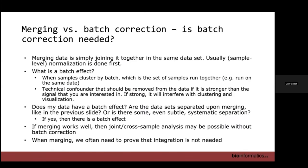Merging is the idea that you just combine the datasets, and batch correction means that you apply some batch correction method. What's the difference between these, and why would you do one versus the other? Merging simply joins everything together — you frequently normalize your data, and sometimes that can make a difference in how well things merge. Sometimes the merging works great and you don't need to do any batch correction. You actually have to evaluate the data before deciding.